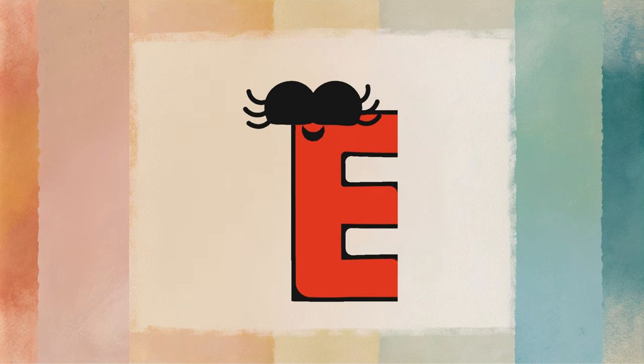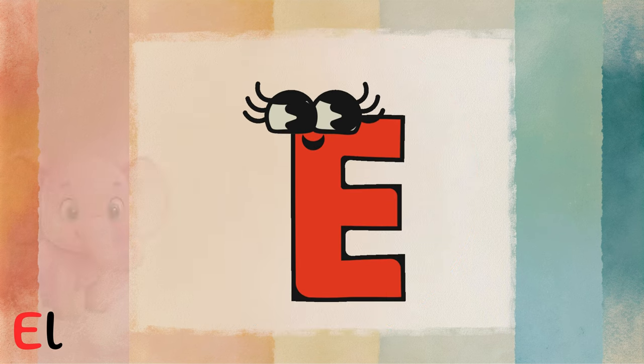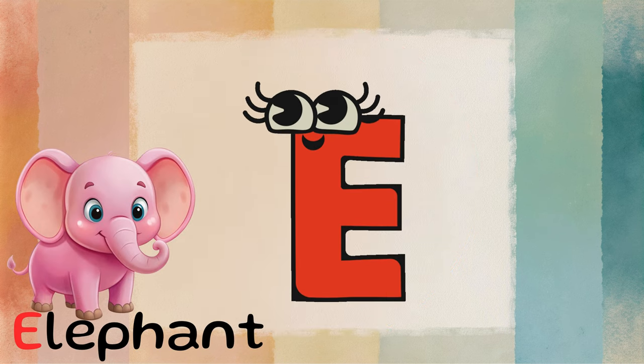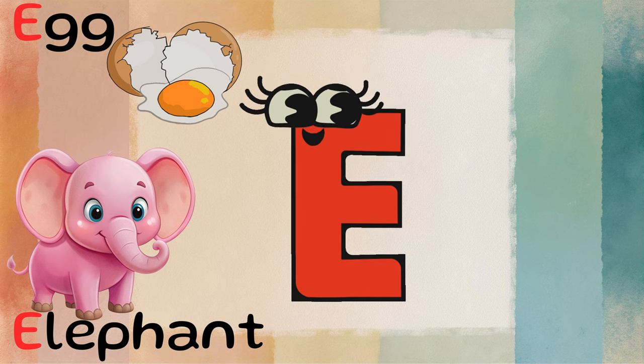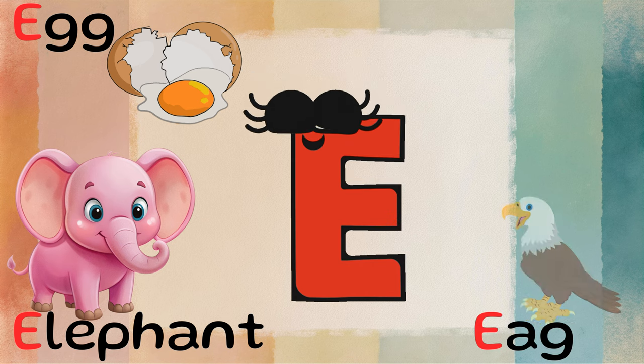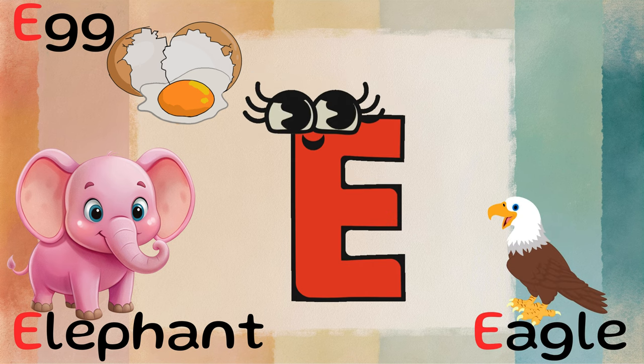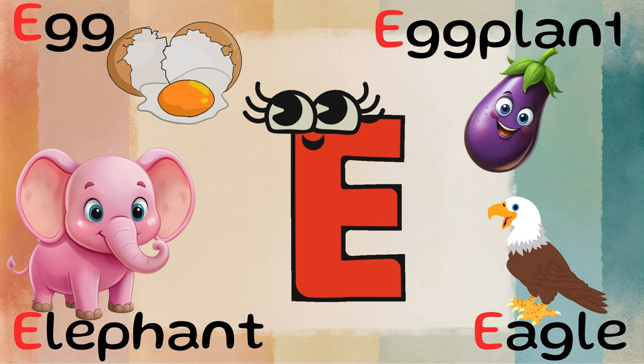This is the letter E. E is for elephant. E is also for egg. E is for eagle. E is for eggplant.